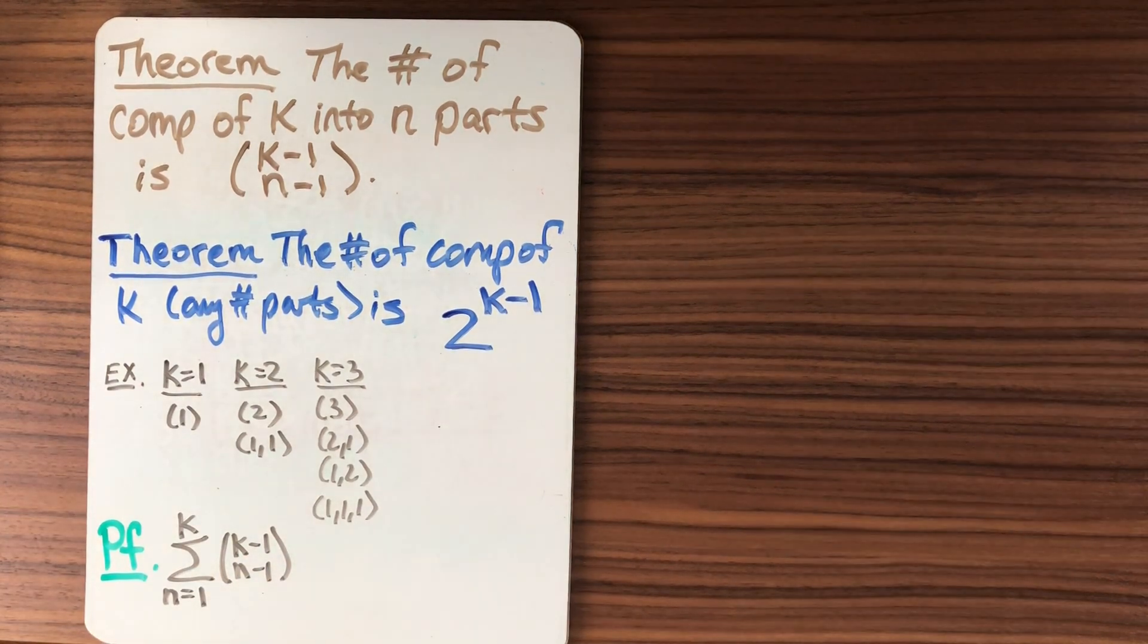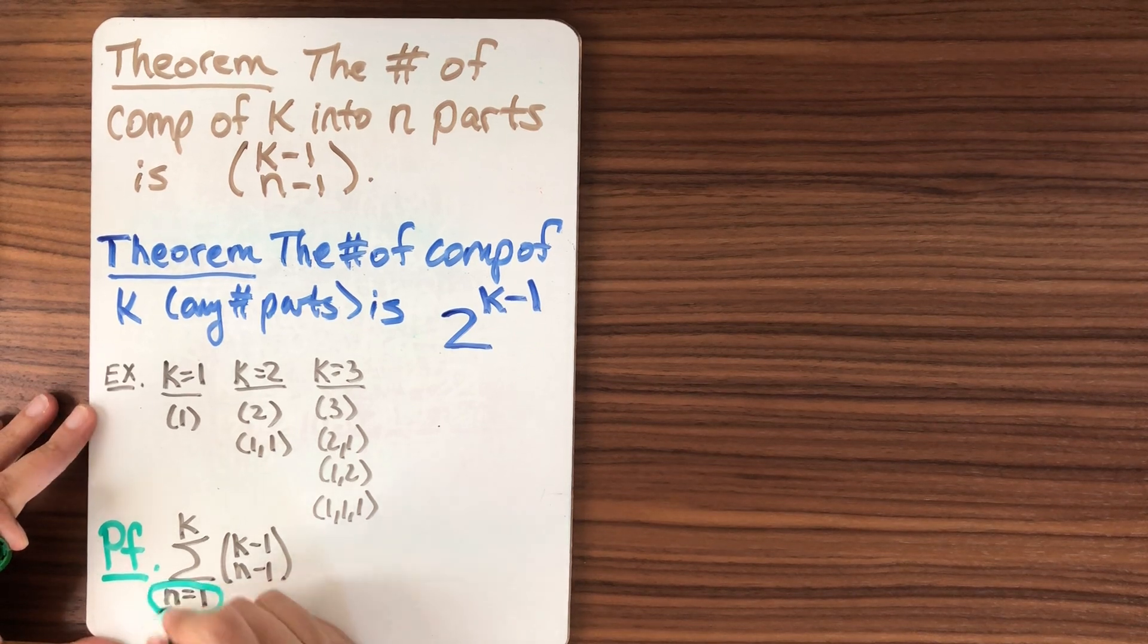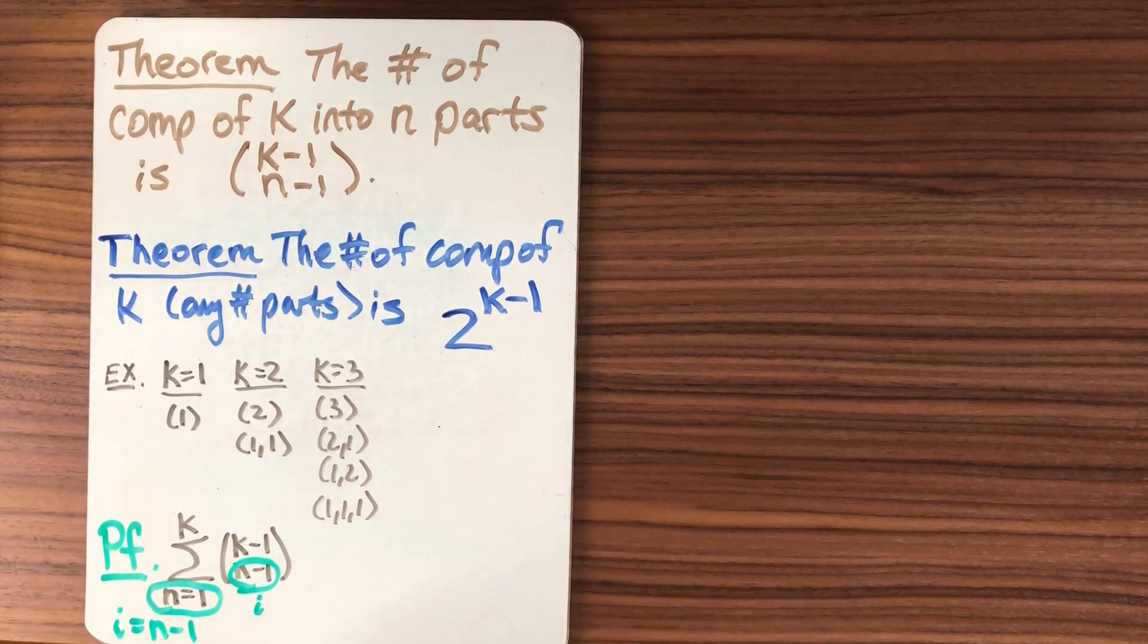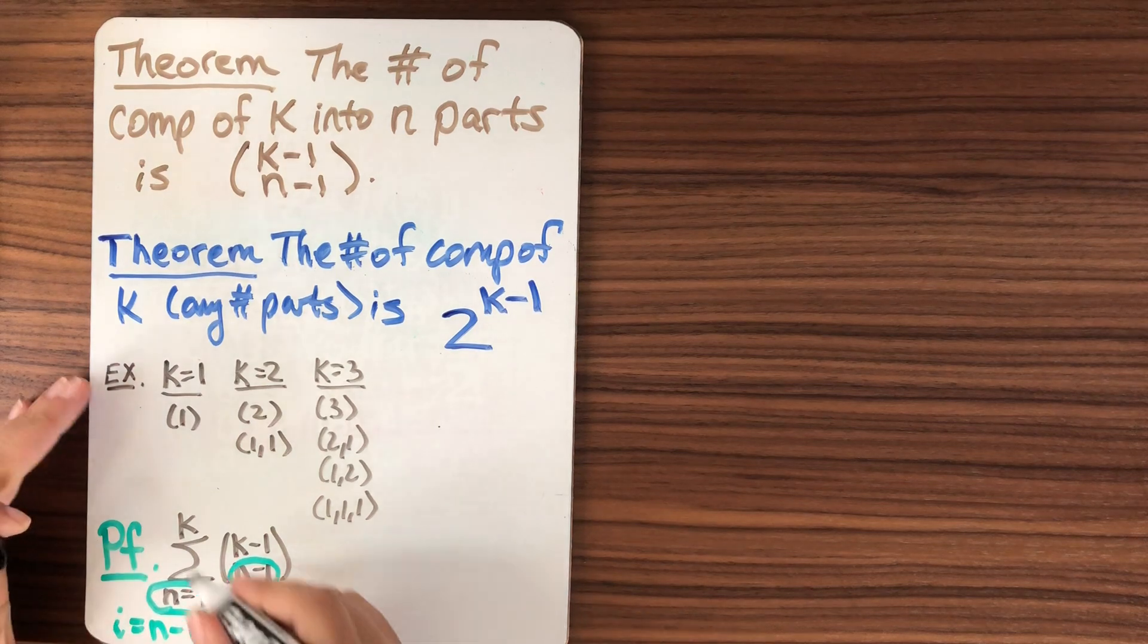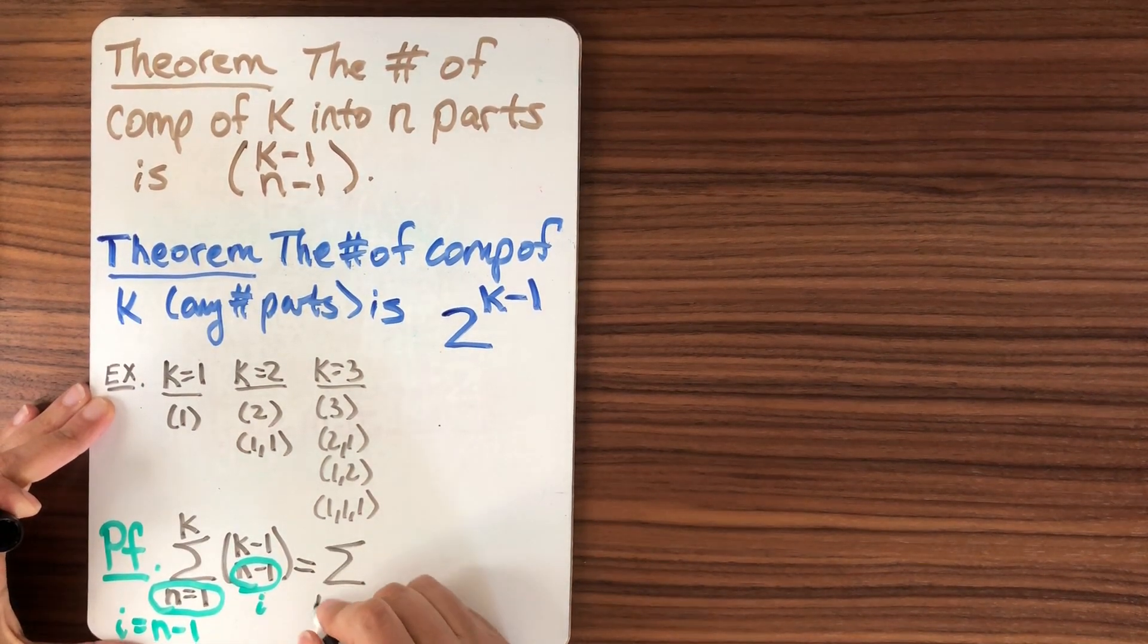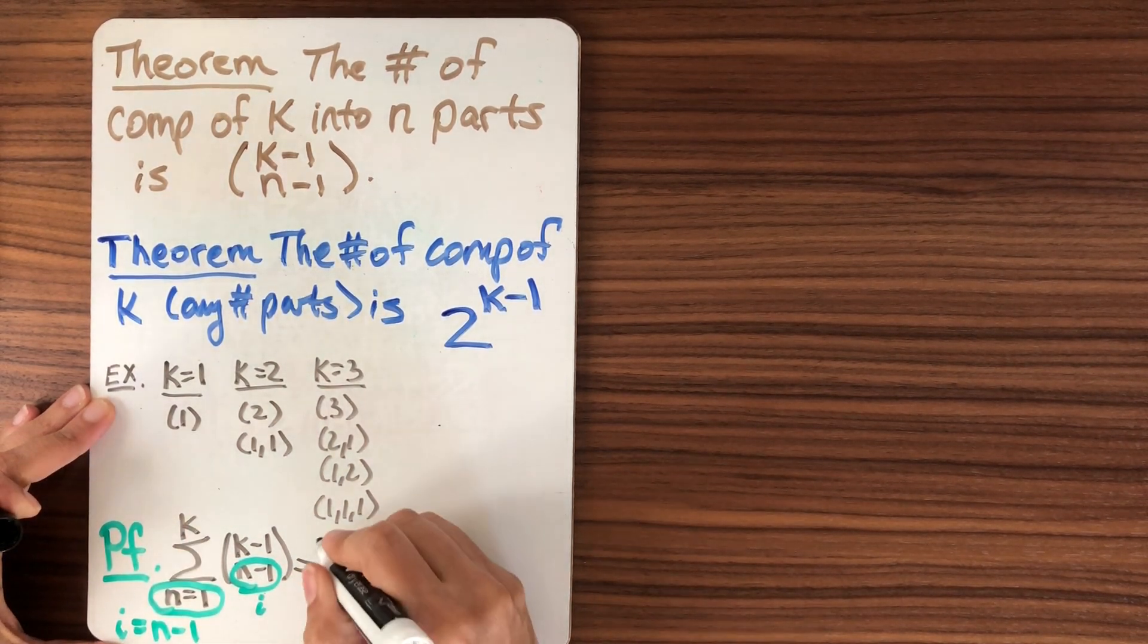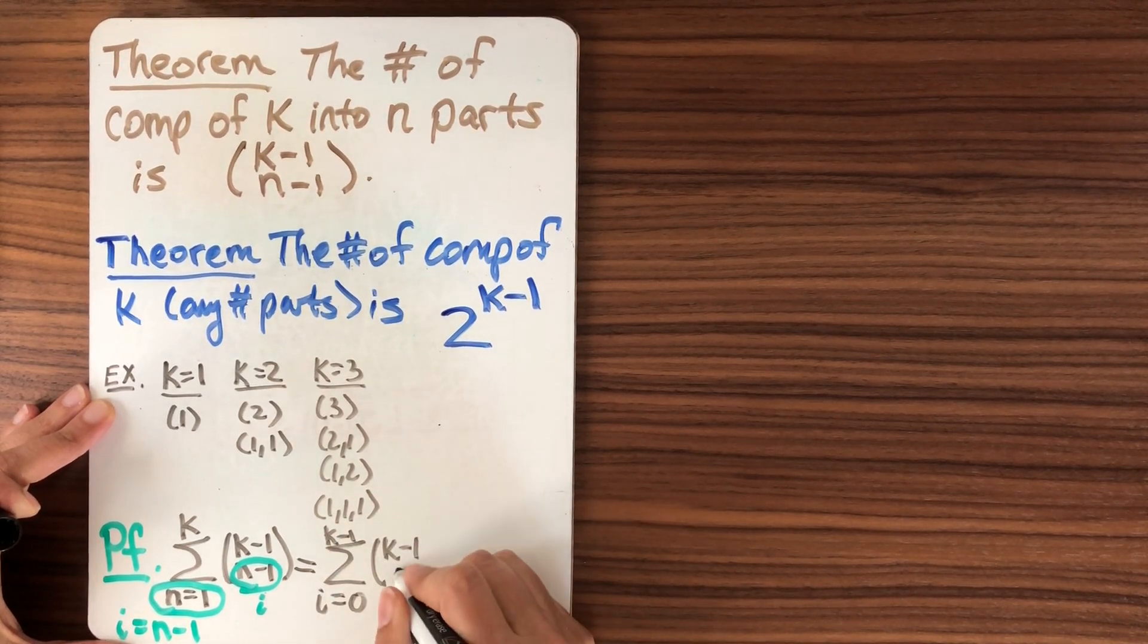Great. Now, I want to change my indexing a little bit. So I'm going to change this indexing down here. I'm going to let i equal n minus one. That way, this amount here is going to become i. So that's going to make it a little cleaner for me. And I'm also going to have to change the top of my summation. So I'm going to sum from i equals zero. Now, the biggest n could be is k. So the biggest i can be is k minus one.